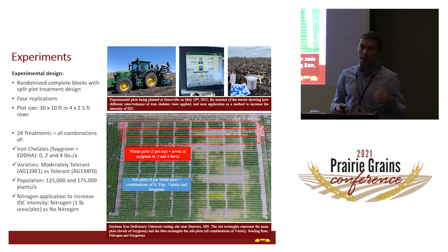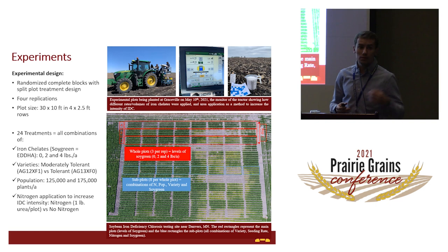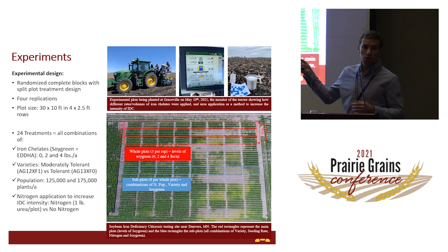In total we had 24 treatments representing the combination of all farming factors and their levels. We tested three levels of iron chelate: zero, two, and four pounds per acre of soybean. We tested two varieties — a moderately tolerant variety and a tolerant variety. I'll mention the tolerant variety later; there's also a susceptible variety included for easier interpretation and visualization.